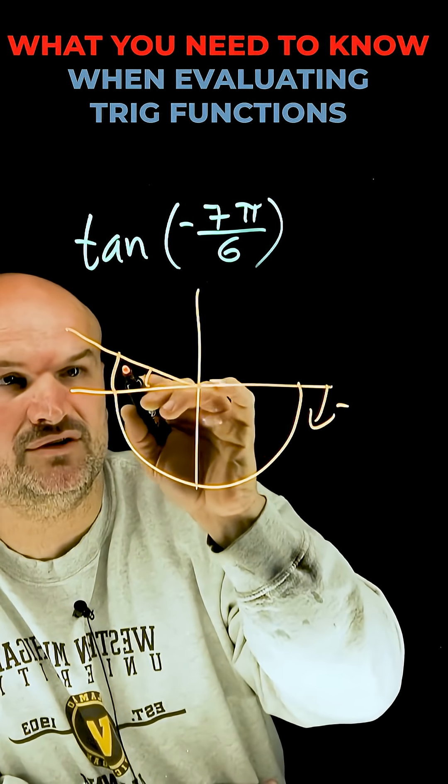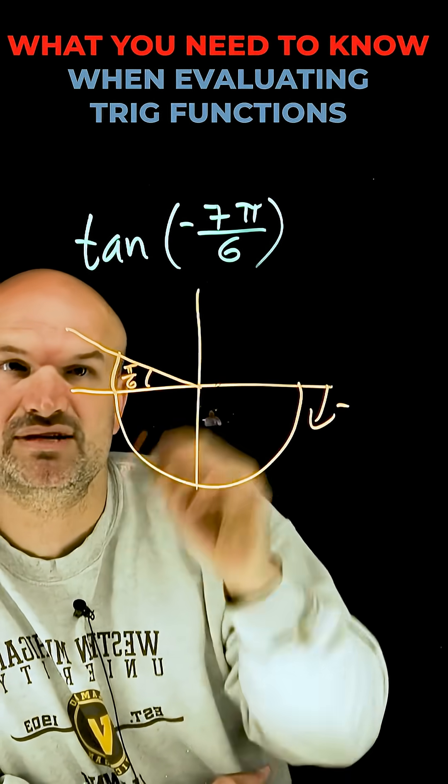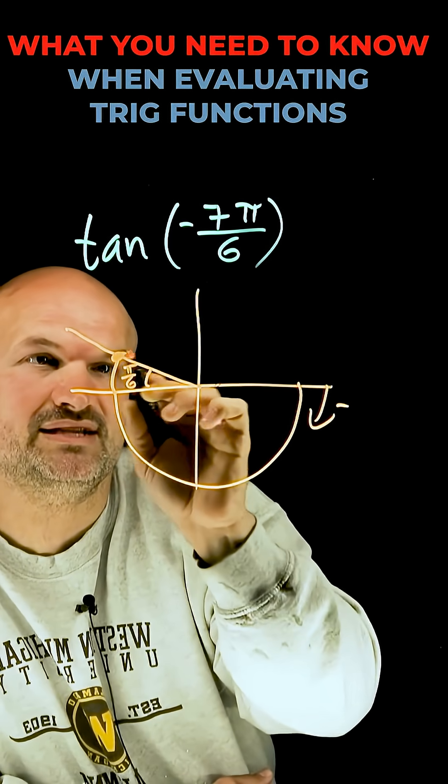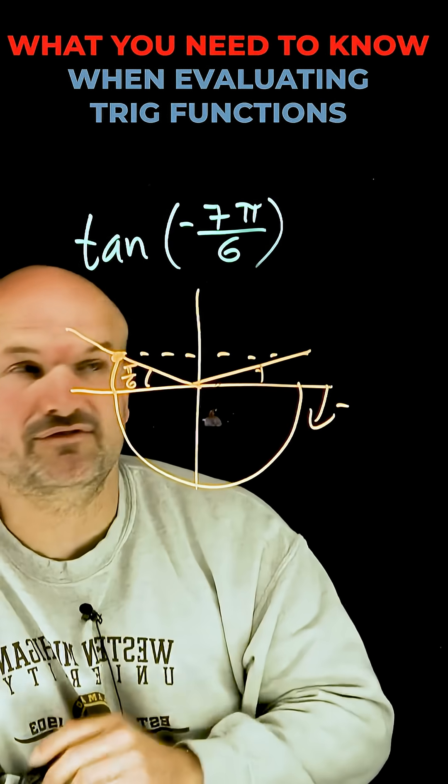Now we know the reference angle in this case, which is the distance from the angle to the x-axis, is pi over 6. The reason why that's important is because this point has the exact same point of an angle at pi over 6 in the first quadrant.